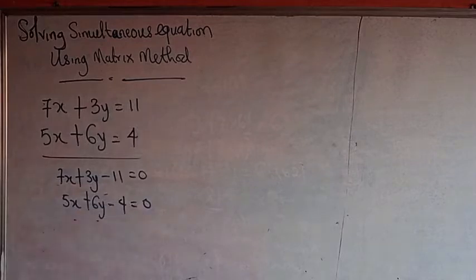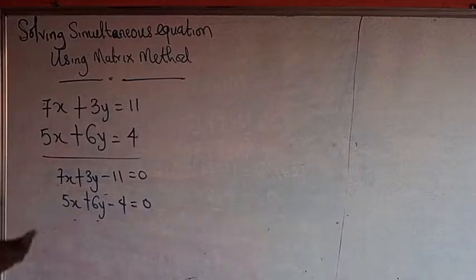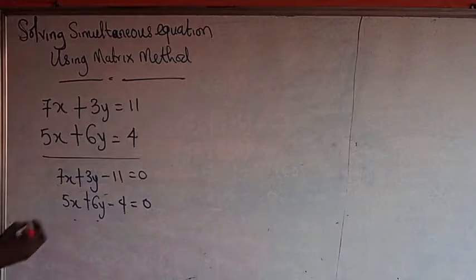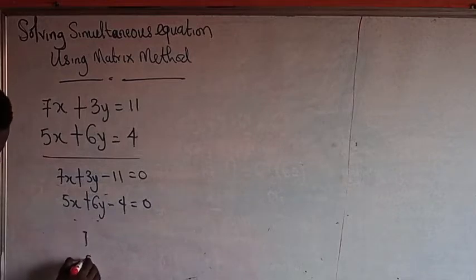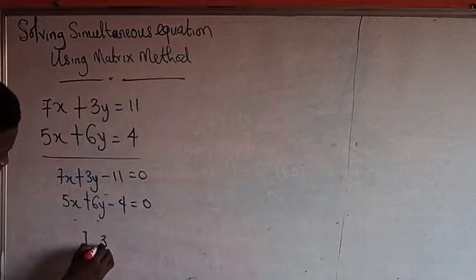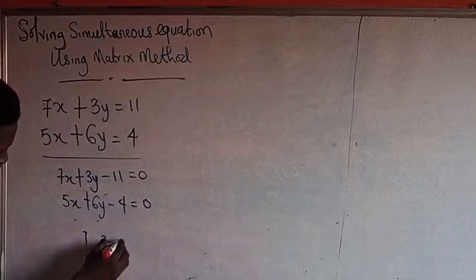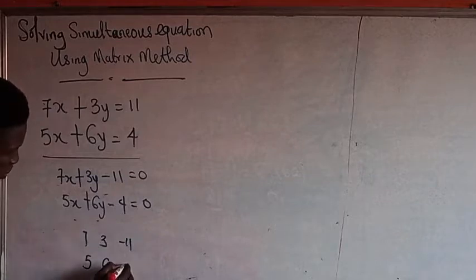After doing this, the next thing I need to do is to put them in matrix form. In matrix form, that will be: 7, 3, 5, 6 for the coefficient matrix, and minus 11 and 4 for the constants.